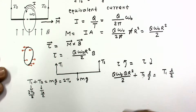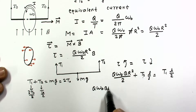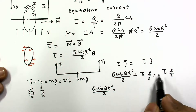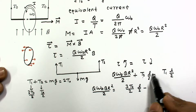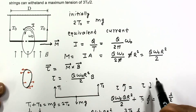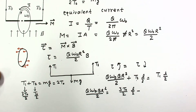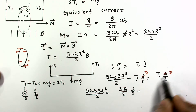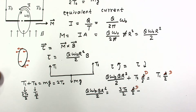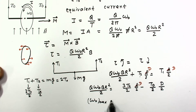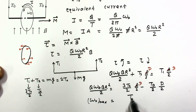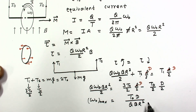Putting all values into the torque equation: QΩ₀BR²/2 = T1·(D/2) − T2·(D/2), where D is the distance between the strings. Substituting T1 = 3T₀/2 and T2 = T₀/2, and solving, the maximum angular velocity comes out as ω₀_max = T₀D / (QBR²). This is the final answer to this problem.